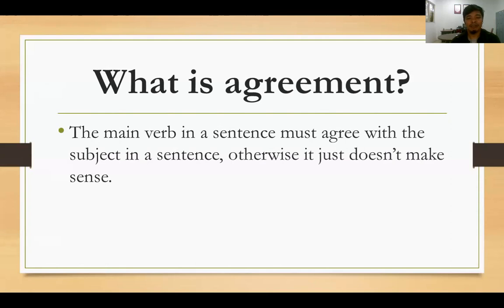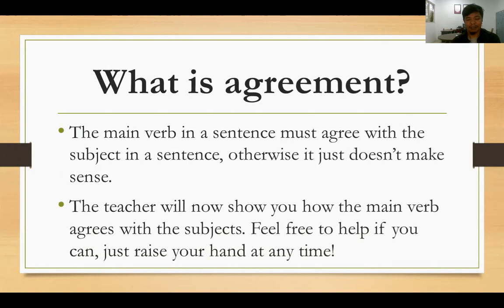And then, what is agreement? The main verb must agree with the subject in the same way. Jadi yang namanya main verb itu harus menyesuaikan diri dengan subject dalam sebuah kalimat. Otherwise, jika tidak, it just doesn't make sense — tidak akan nyambung antara subject dengan predikatnya. Karena itu kita akan mendiskusikan beberapa hal terkait dengan subject agreement dalam bahasa Inggris.